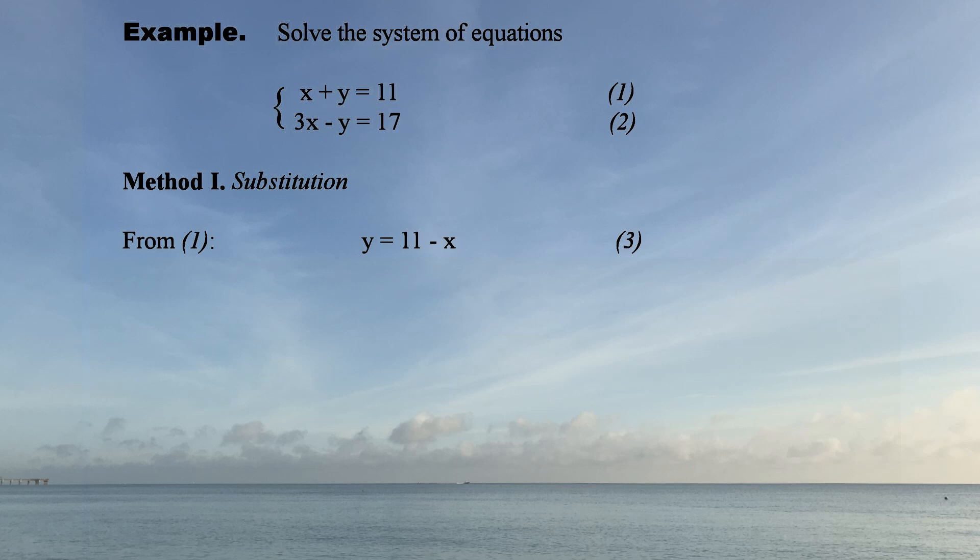Substitute equation 3 into equation 2. We have 3x - (11 - x) = 17.